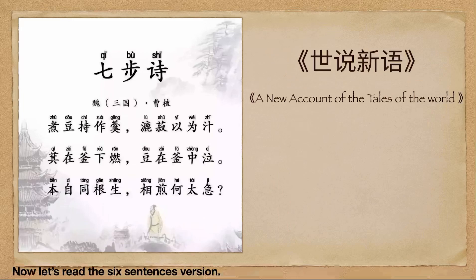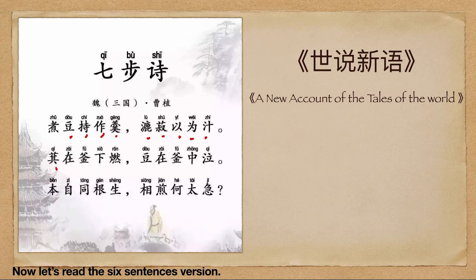七步诗 — 煮豆持作羹，漉菽以为汁，萁在釜下然，豆在釜中泣，本是同根生，相煎何太急。